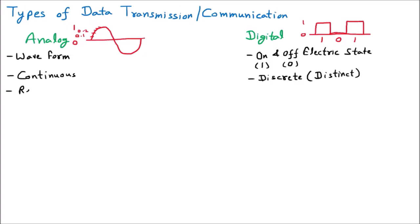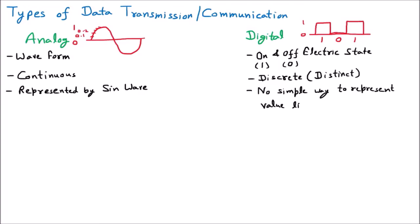Analog signals are represented by a sine wave — the signal looks like a sine wave, as we have seen in mathematics and physics. Talking about digital signals, there is no way to represent a value like 0.25. If you want to represent 0.25, there is no option — you will make it either zero or one. Floating point values are not part of the digital signal.